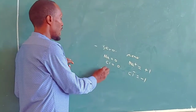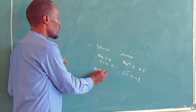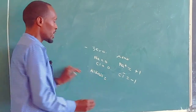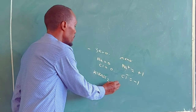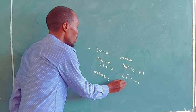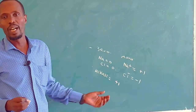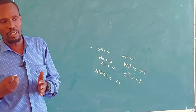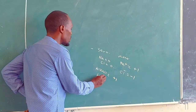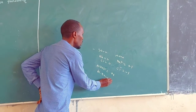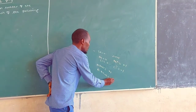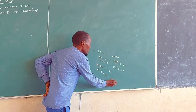The oxidation number of any alkali metal is always plus one. For alkaline earth metals, the oxidation number is always positive two.